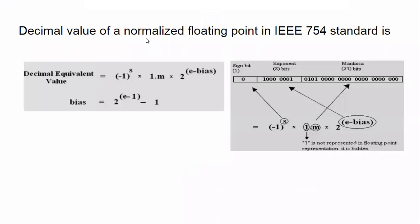The decimal value of a normalized floating point number in IEEE 754 standard is represented as (-1)^s × (1.m) × 2^(e - bias). The format is called 'one point m' because the one is implied and does not need to be stored. E is the stored exponent value and the bias is 127 for 32-bit single precision.